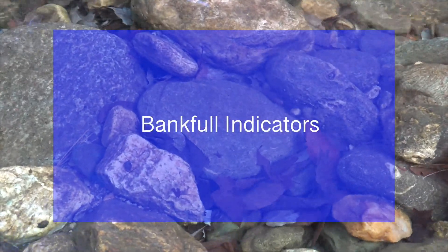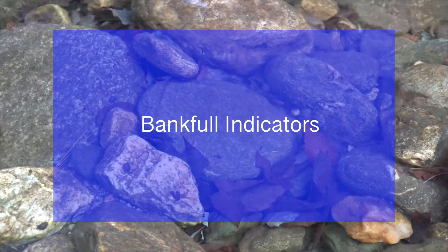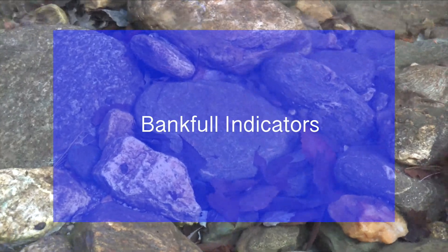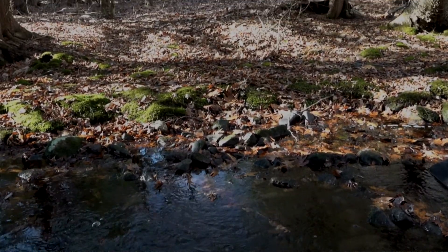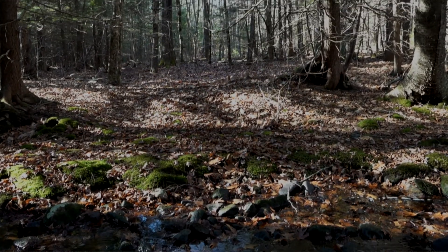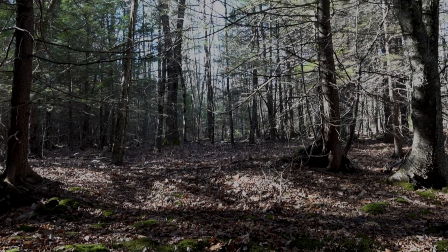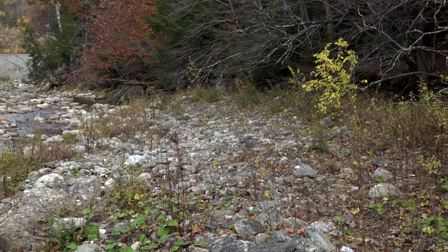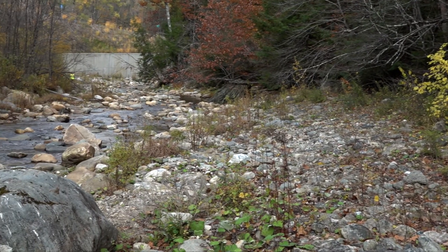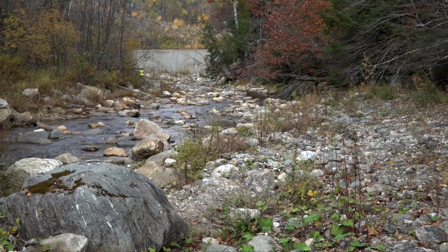When you arrive at the channel, the first task is to identify the bankful indicators. Where is the break in slope where water spills out onto the channel if the river is not incised or cut down in the floodplain? If the river is incised, you often look for the limits of woody vegetation. Any depositional feature, such as a sediment bar, is typically within the bankful channel.